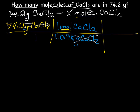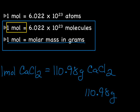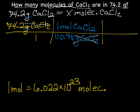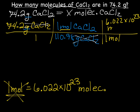We're at moles and need to get to molecules. We have the equality: one mole equals 6.022 times 10 to the 23rd molecules. We have moles on top, so we put one mole on the bottom here and 6.022 times 10 to the 23rd molecules on top. Applying the mistake blocker: moles on top crosses out moles on the bottom. We are left with molecules, which is what we were looking for.